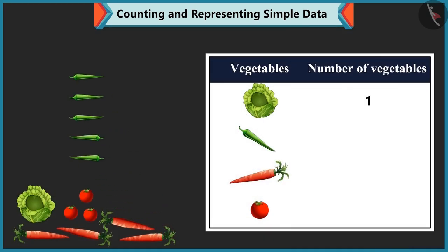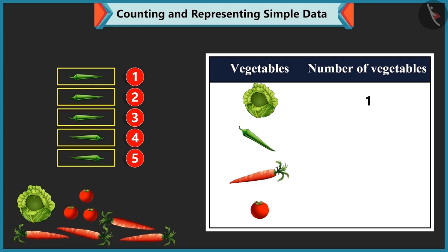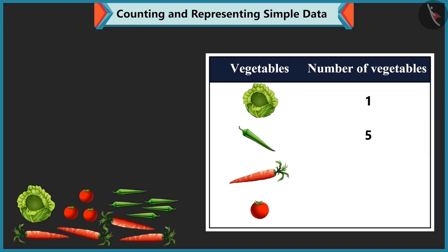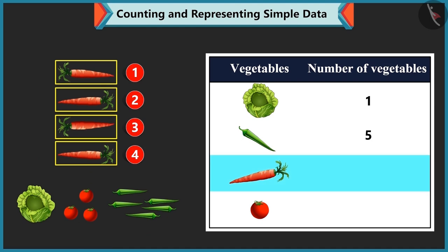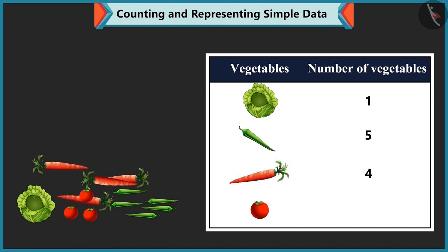I understood. There is 1, 2, 3, 4 and 5 green chillies. So we write 5 against green chilli. Carrots are 1, 2, 3 and 4 over here. So we write 4 against carrot.